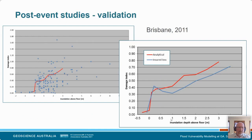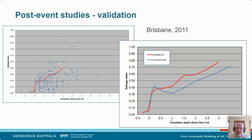So what do we get out of these post-event studies? Well, we can get information to either validate our work that we've already done, or to perhaps create completely new empirical curves if we have enough data. The red curve is one of our stage damage curves developed analytically. All those blue points on the graph to the left are outcomes we received from the postal survey — the same building type generally — and people responded with how much water came into their house and what it cost to repair. There's a lot of scatter, which is typical of post-event data. We can condense that down into a curve on the graph on the right, which gives us confidence that our curves are heading in the right direction.